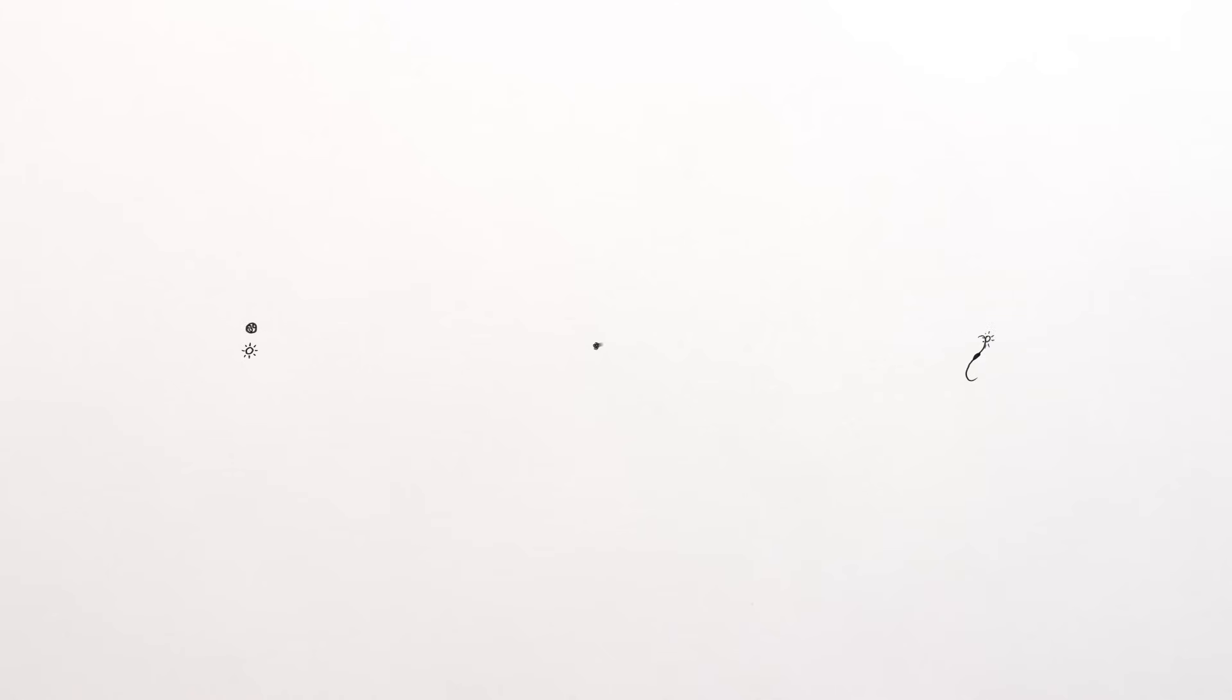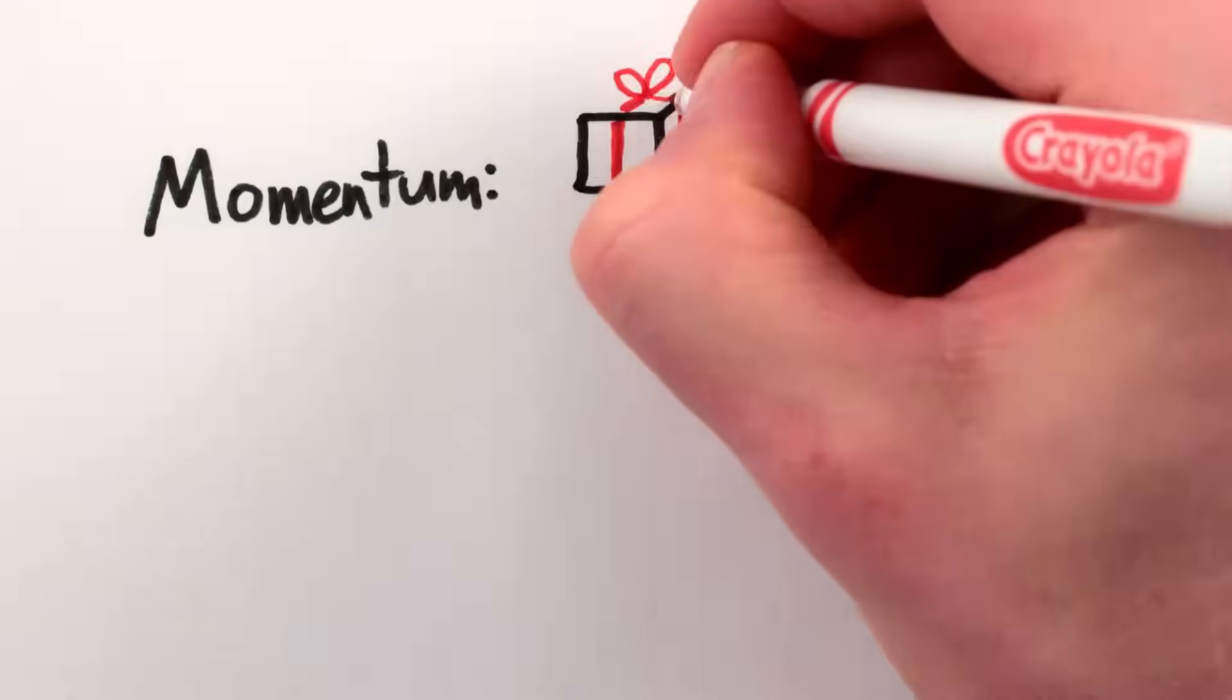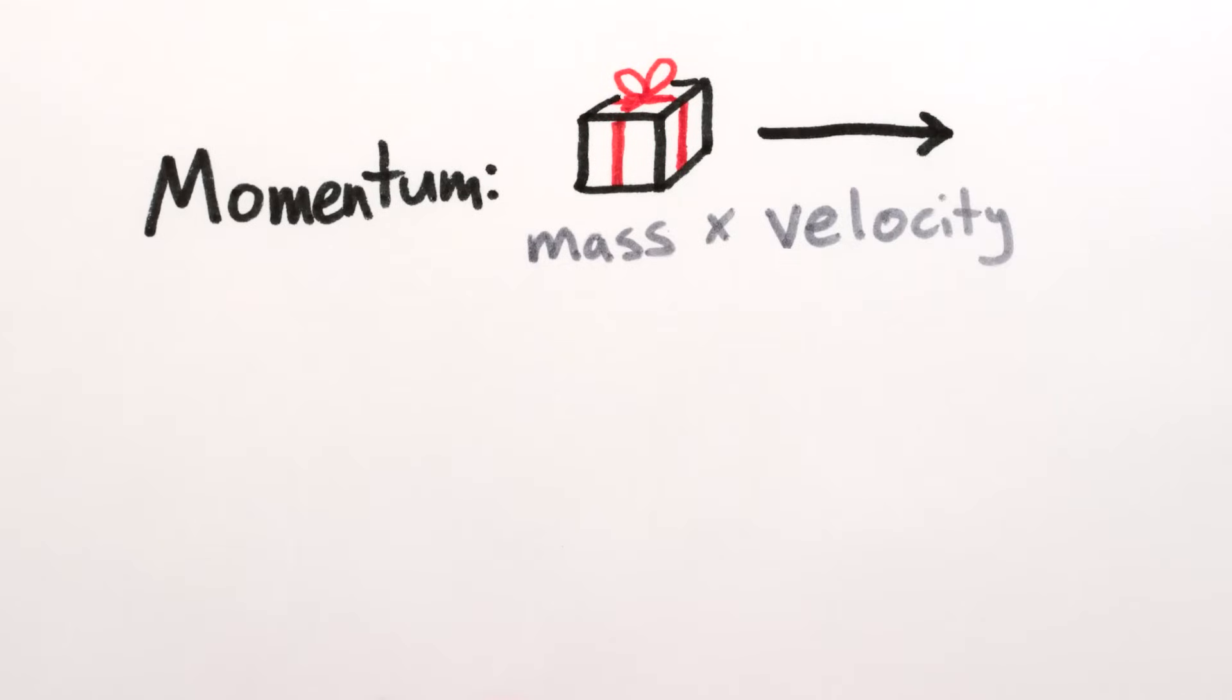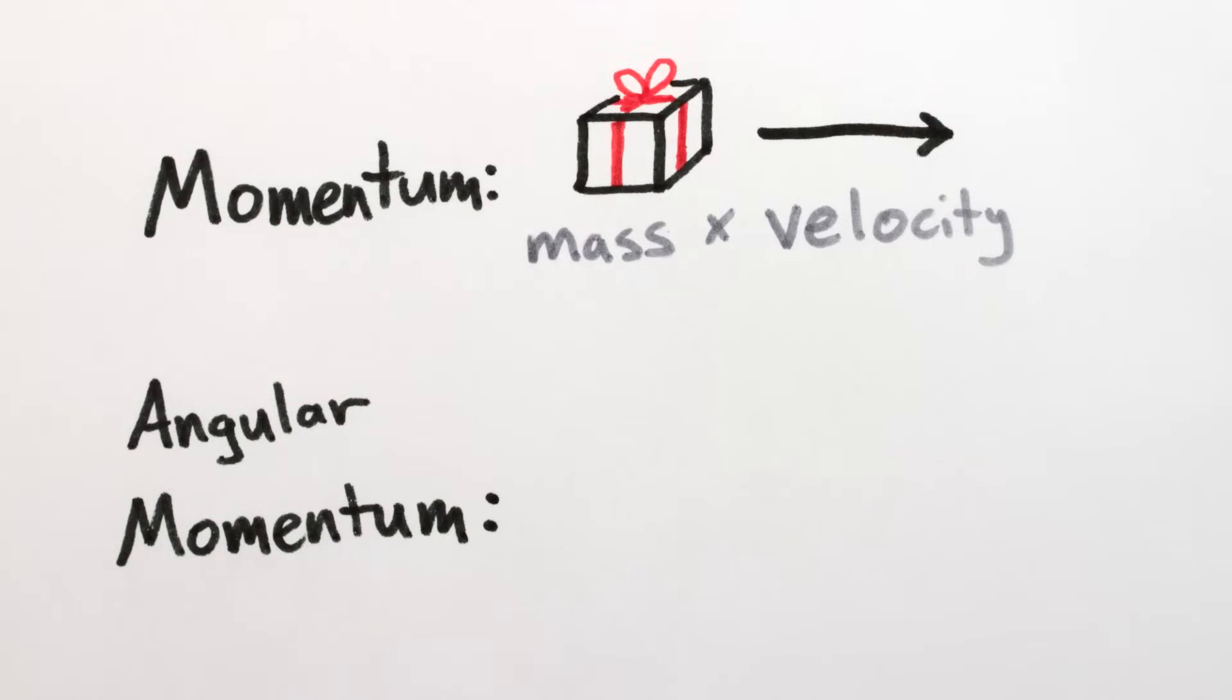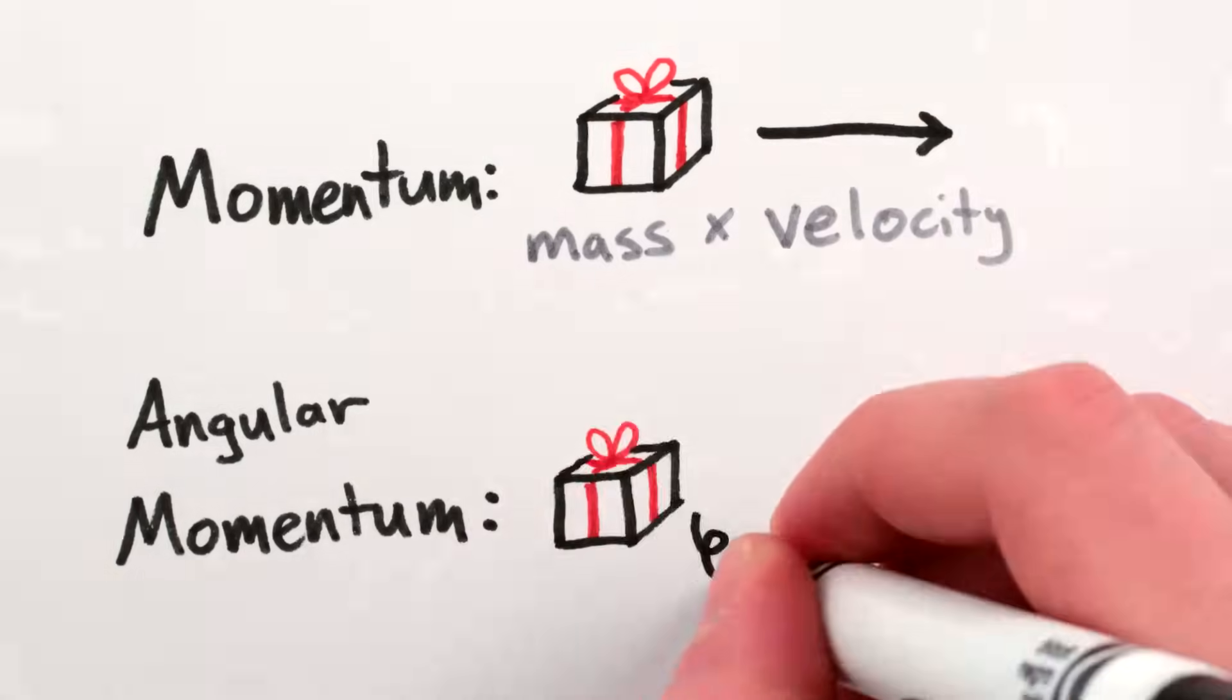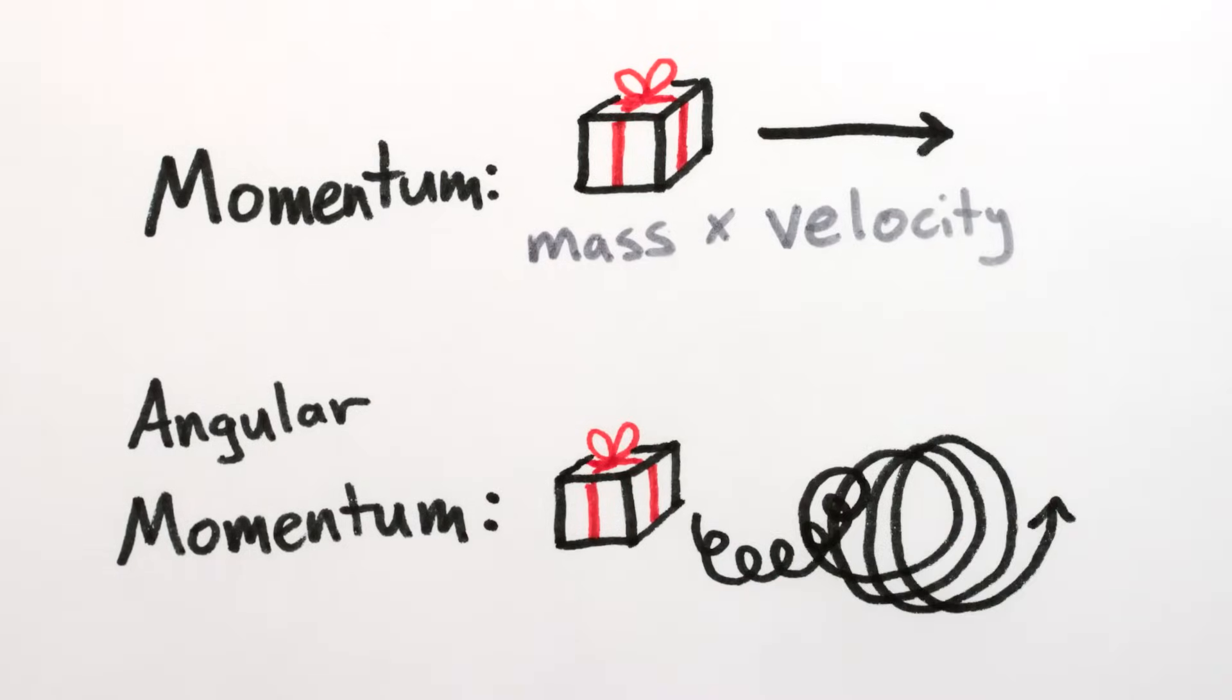We can still talk about it, though. Just like momentum is a concept that describes how much oomph an object has when it moves in a straight line, angular momentum is a way to account for how much oomph objects have when they're going in circles, figuratively or literally.